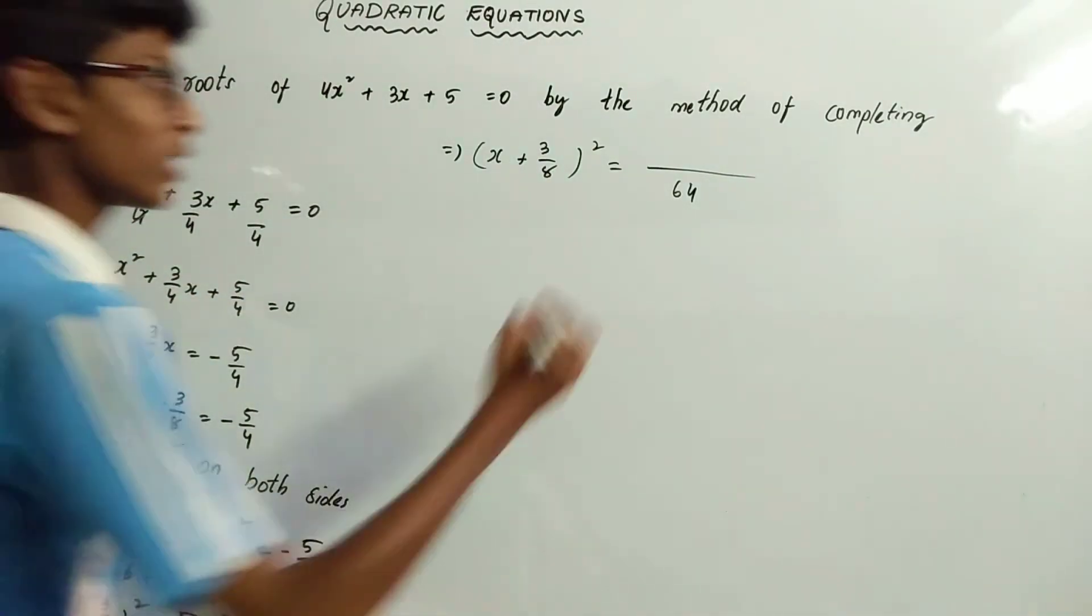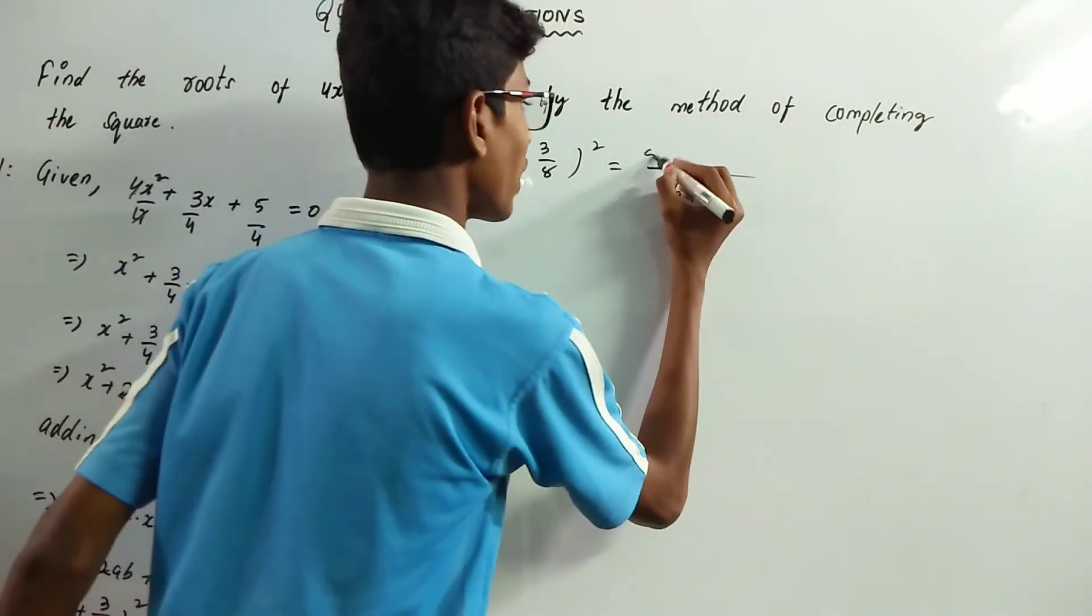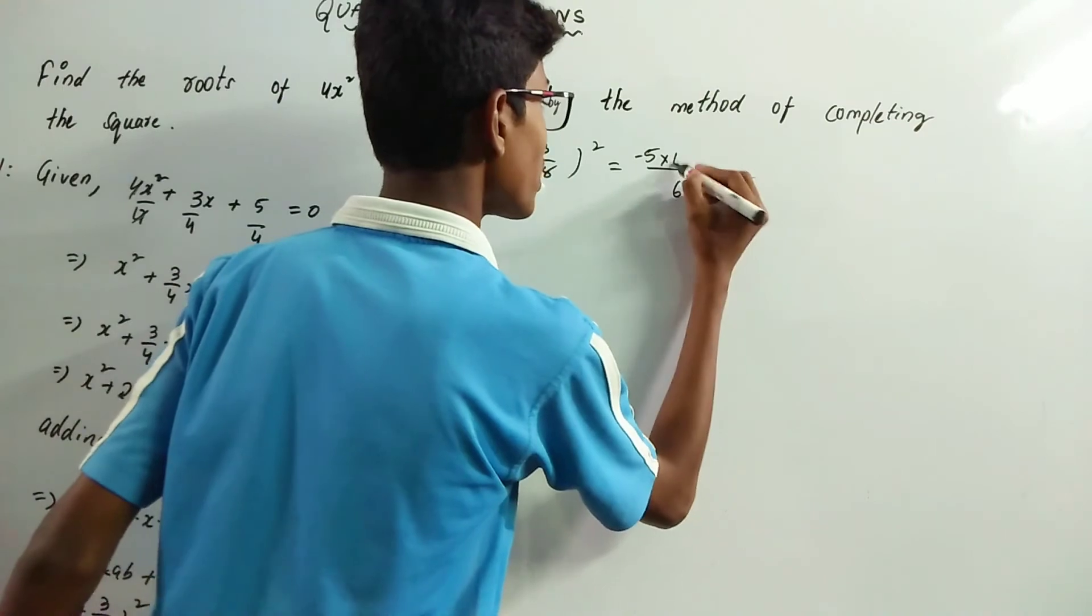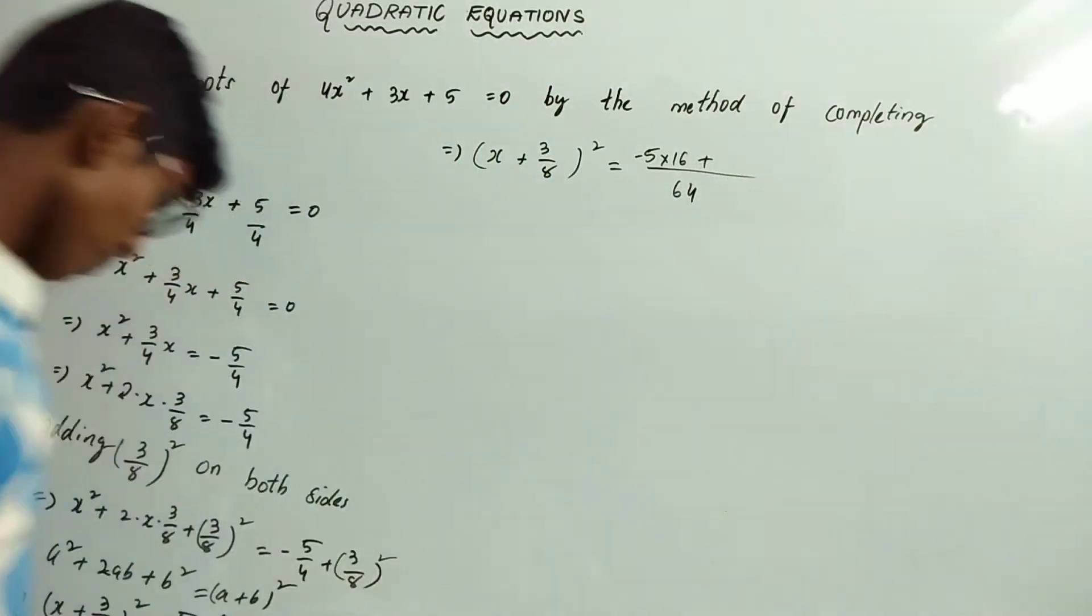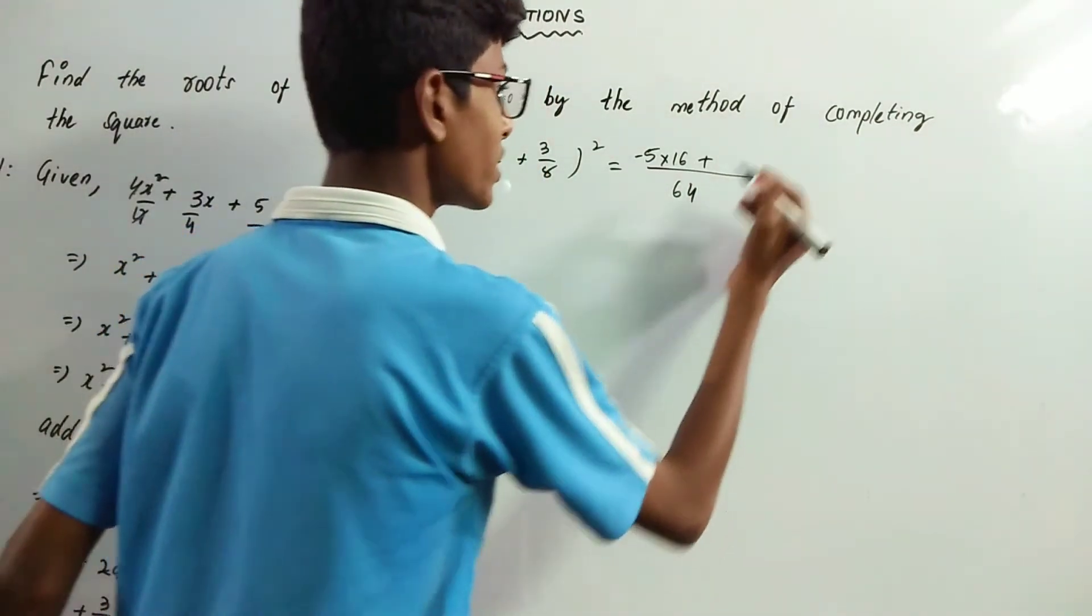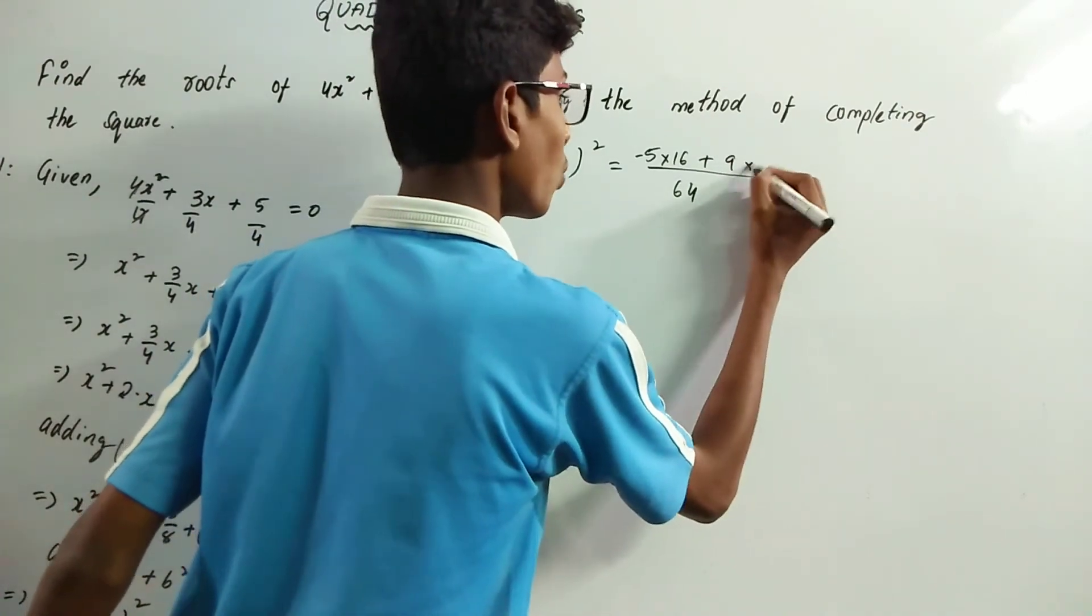64 divided by 4 is 16, so -5 × 16. Plus 64 divided by 64 is 1, so 9 × 1.